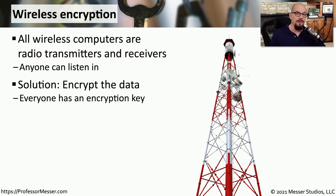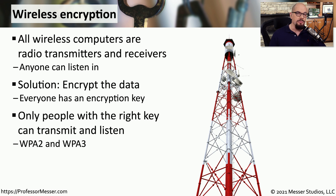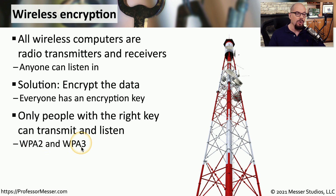If you want that information to remain private, then you need to enable encryption on that wireless access point. Everyone using the network will have an encryption key that's used to send and receive all of the data. If you don't have the encryption key, you won't be able to understand any of the information being sent. So if you're using WPA2 or WPA3 encryption, all of this information is protected over the wireless network.